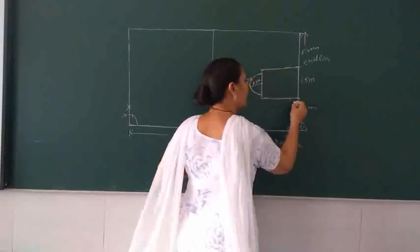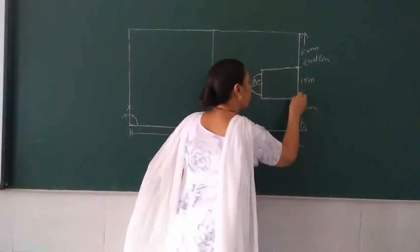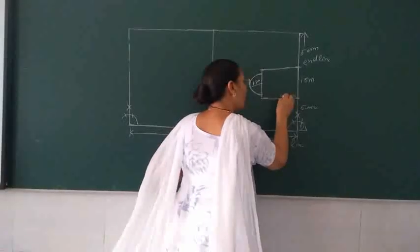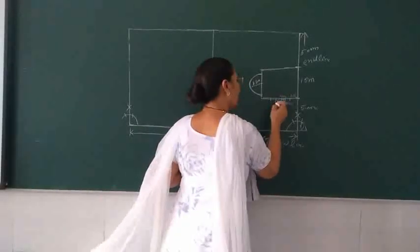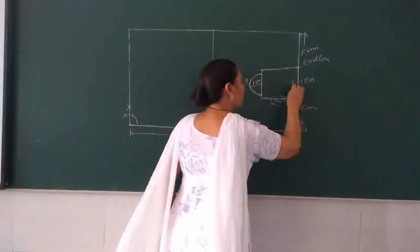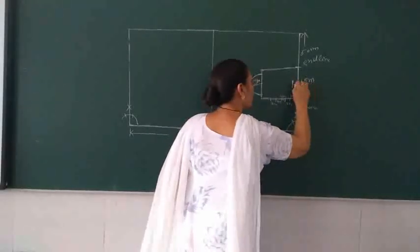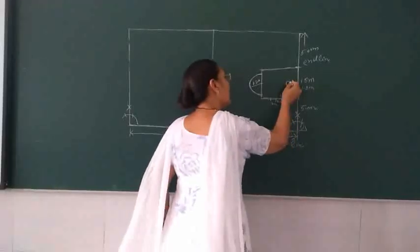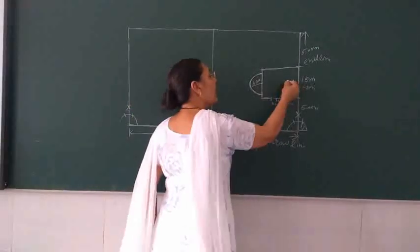For the free throw lanes: the first lane distance from the end line is 1.75 meters. The second lane is 85 centimeters. Then the neutral area is 40 centimeters. Then again 85 centimeters, and one more lane of 85 centimeters. The backboard is at a distance of 1.20 meters from the end line. The basket ring has a diameter of 45 centimeters.